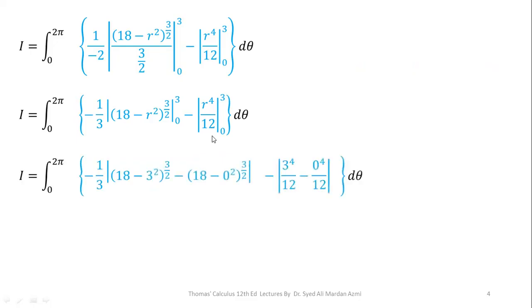After cancelling common factors — the 2s cancel — we have minus 1 over 3 times (18 − R²)^(3/2) evaluated from 0 to 3, minus R⁴ over 12 evaluated from 0 to 3. Applying the limits, for the upper limit we replace R with 3 and for the lower limit R with 0, doing so for each term.